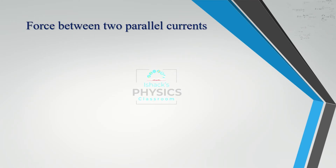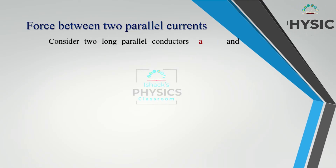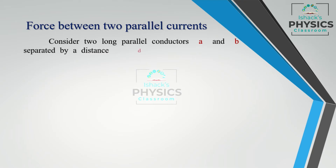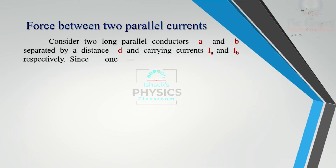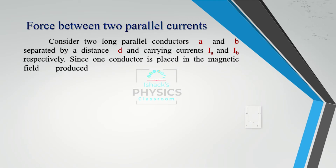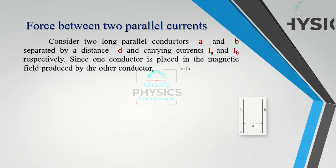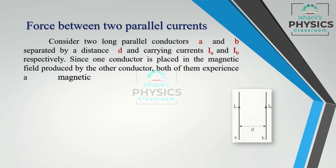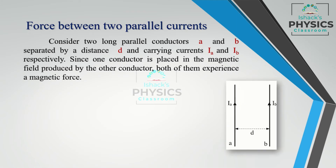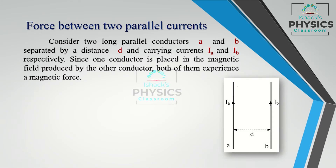We discuss the force between two parallel current-carrying conductors. Consider two long parallel conductors A and B, separated by distance d, and carrying currents Ia and Ib respectively. Since one conductor is placed in the magnetic field produced by the other conductor, both of them experience a magnetic force.